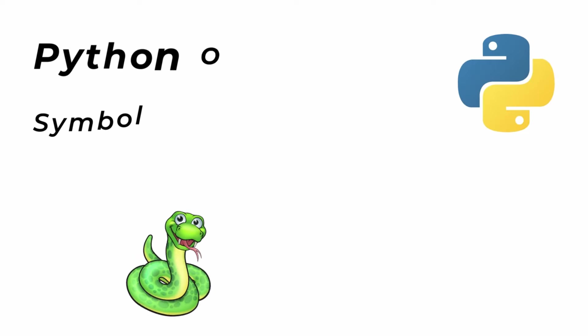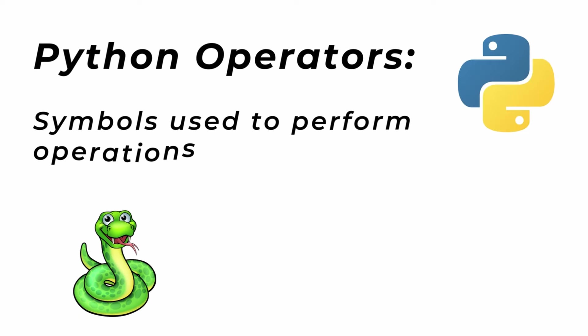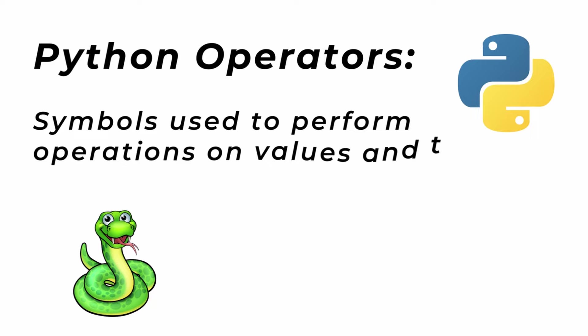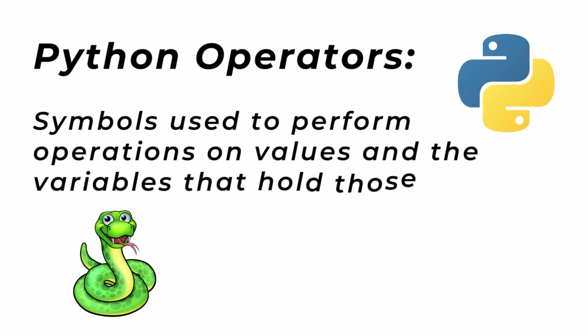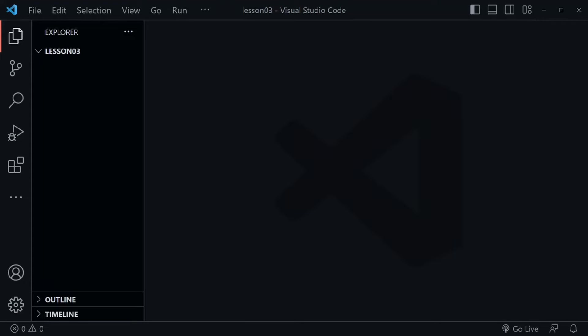In the last lesson we defined a statement as an operation on a value. Now we can define Python operators as symbols used to perform operations on values and the variables that hold those values. So let's look at some examples, and we'll do that by opening a terminal window first.